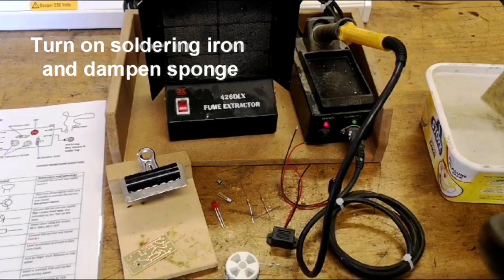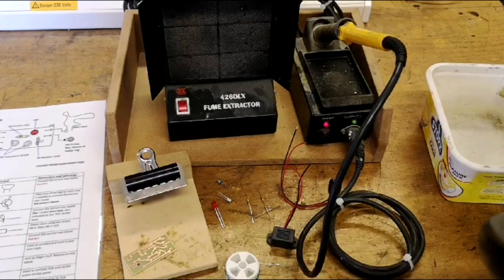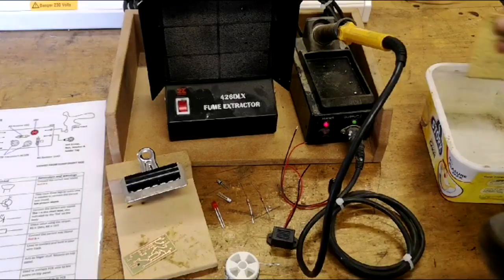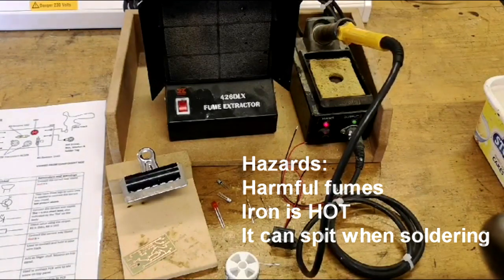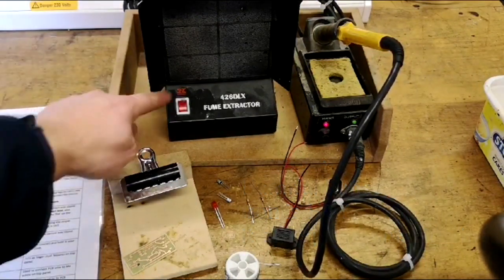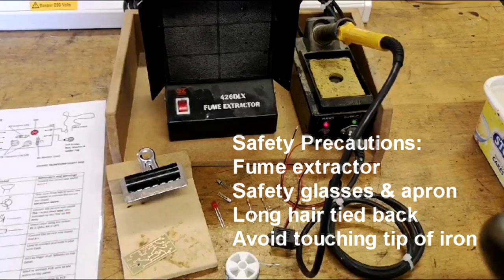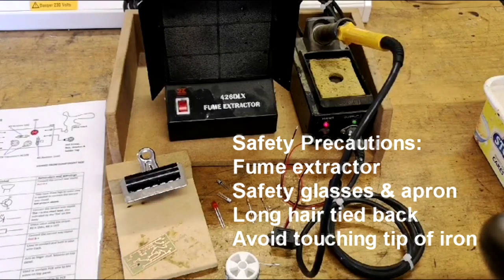Your sponge needs to be damp but not absolutely soaking. Once I've got some water on my sponge, I'm now ready to solder. The protective equipment that I need for soldering is the fume extractor, which needs to be turned on. You need to wear some goggles and you need to be mindful of the fact that the soldering iron can burn you.